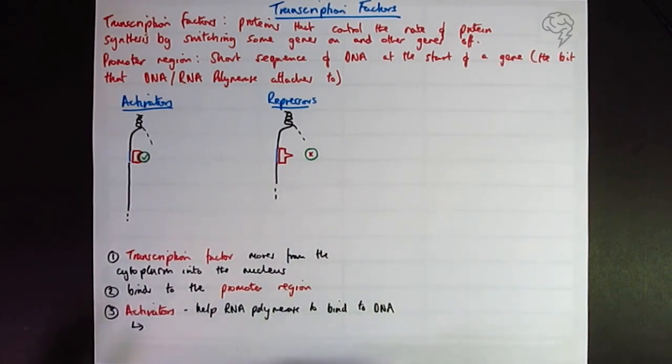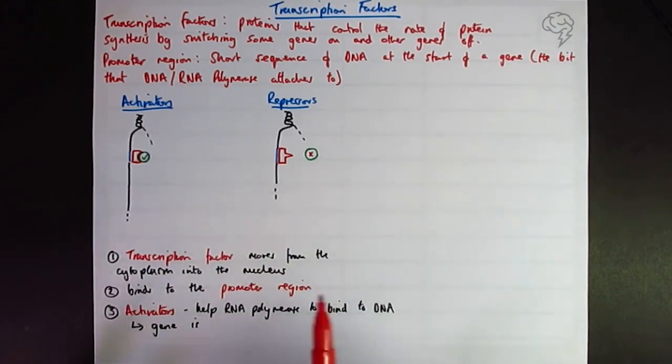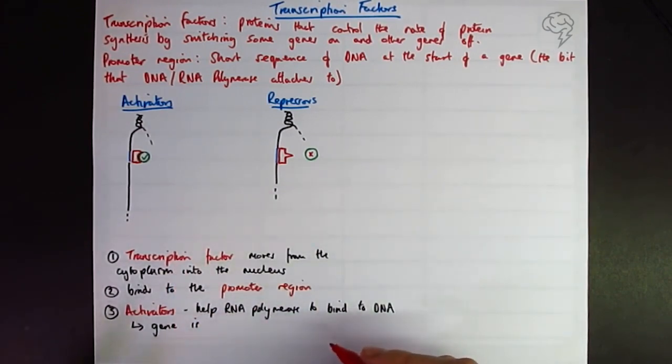And as a result, gene will be transcribed and the gene will be expressed. Here you always want to talk about, this is transcription factor. You want to talk about transcription of the gene. The gene is transcribed. To say that the protein is made is not quite accurate because they want to know about transcription.